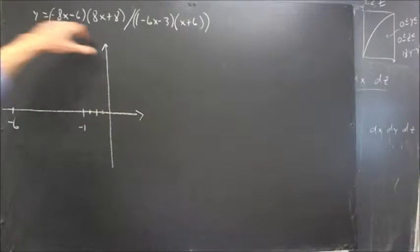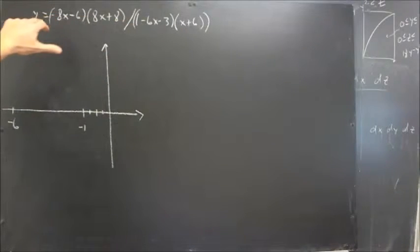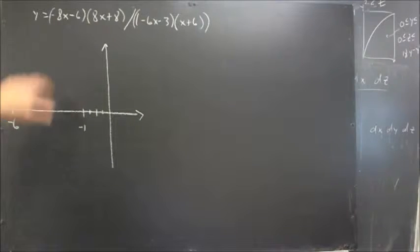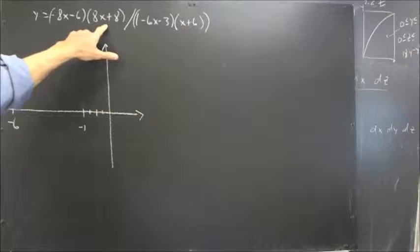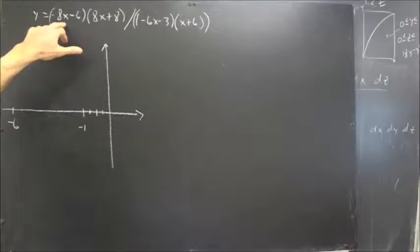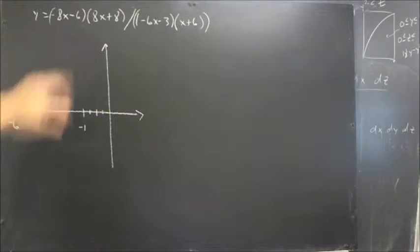Okay, we're graphing this rational function. We've determined that the numerator has zeros at x equals negative 1 from this factor, and at x equals negative 3 fourths from this factor.